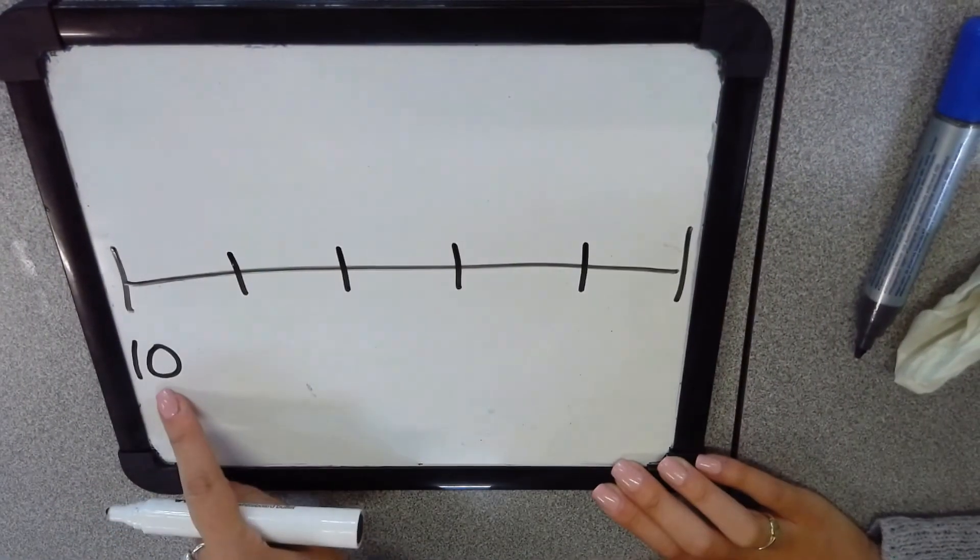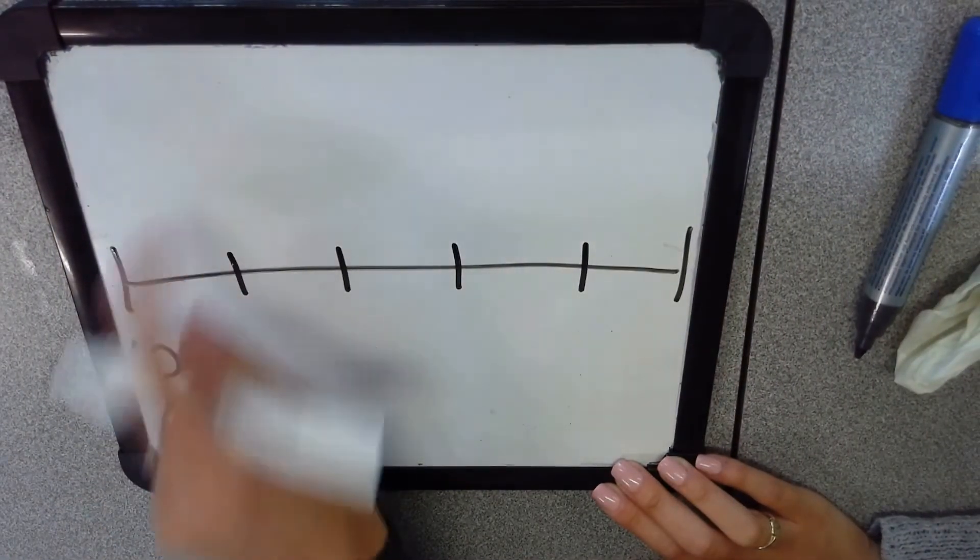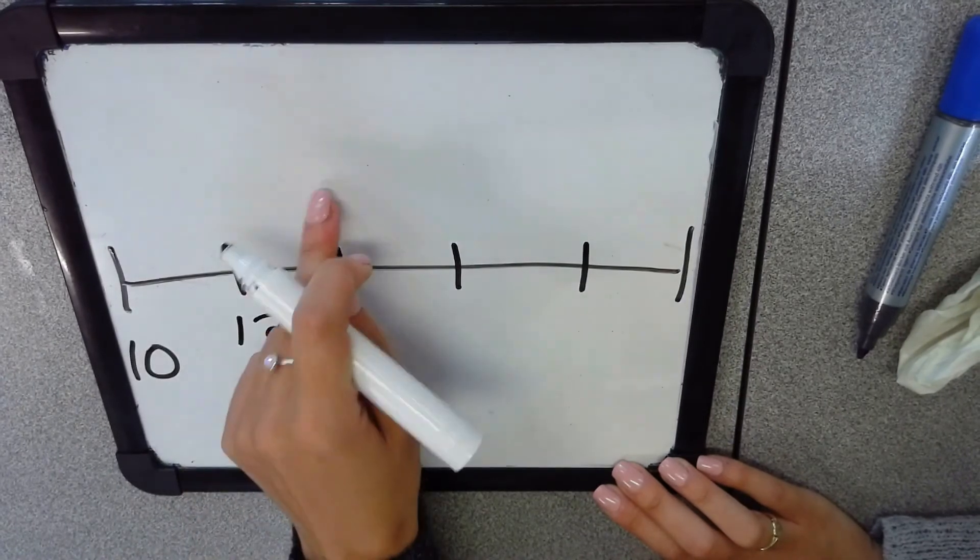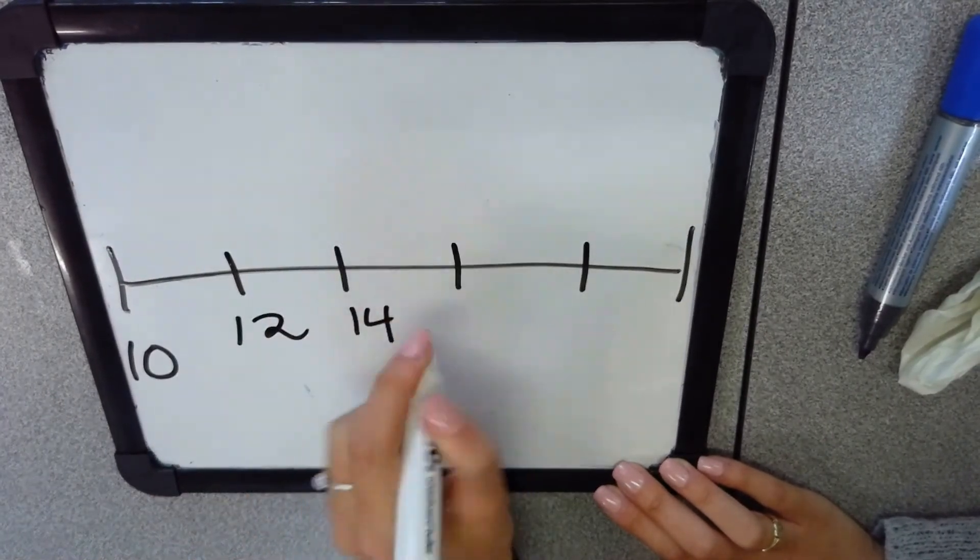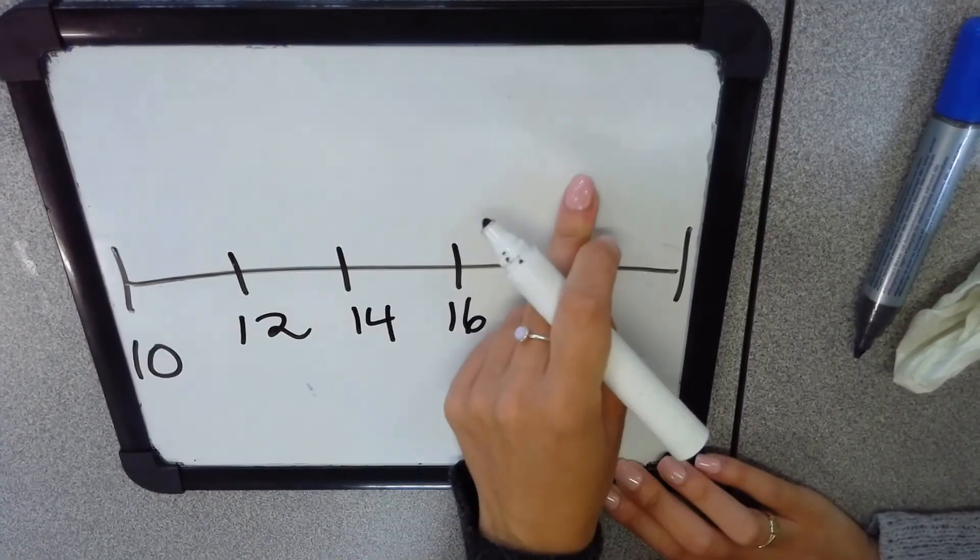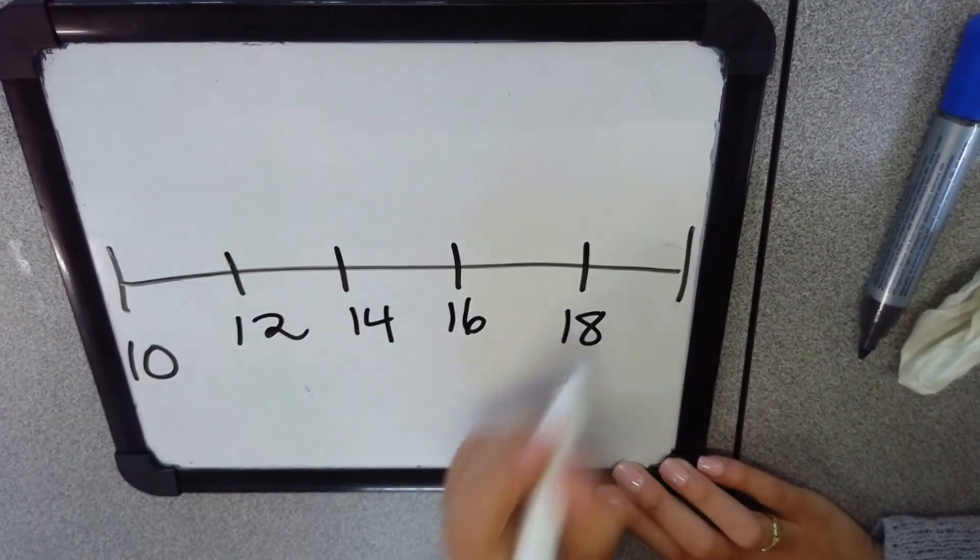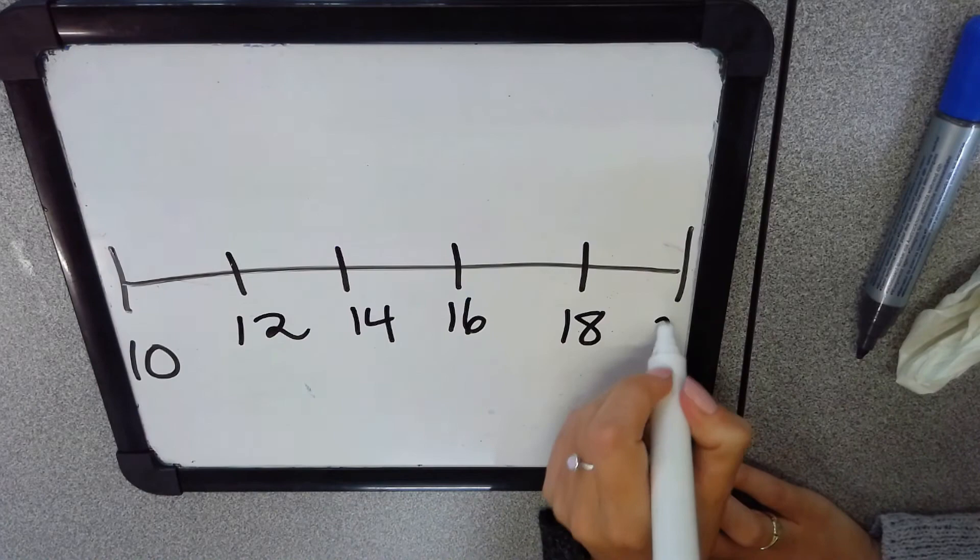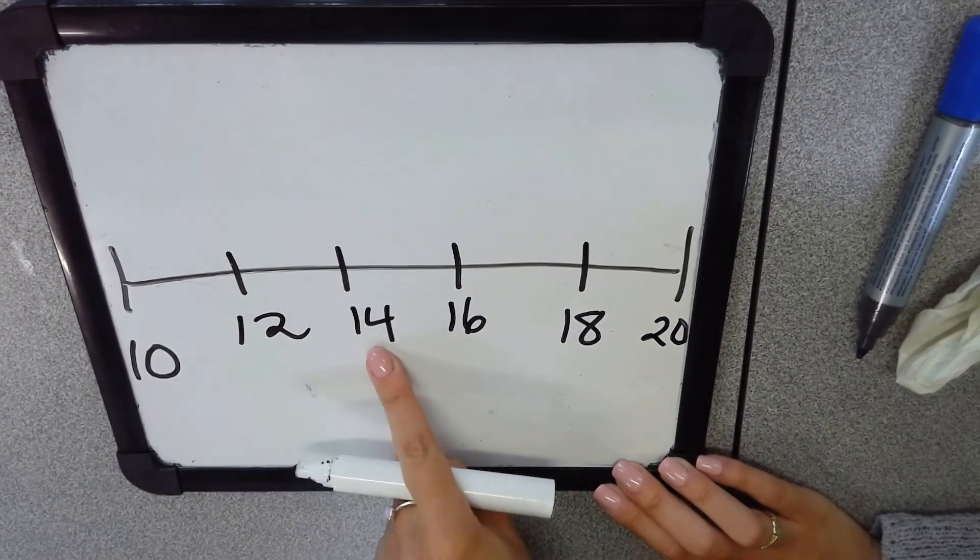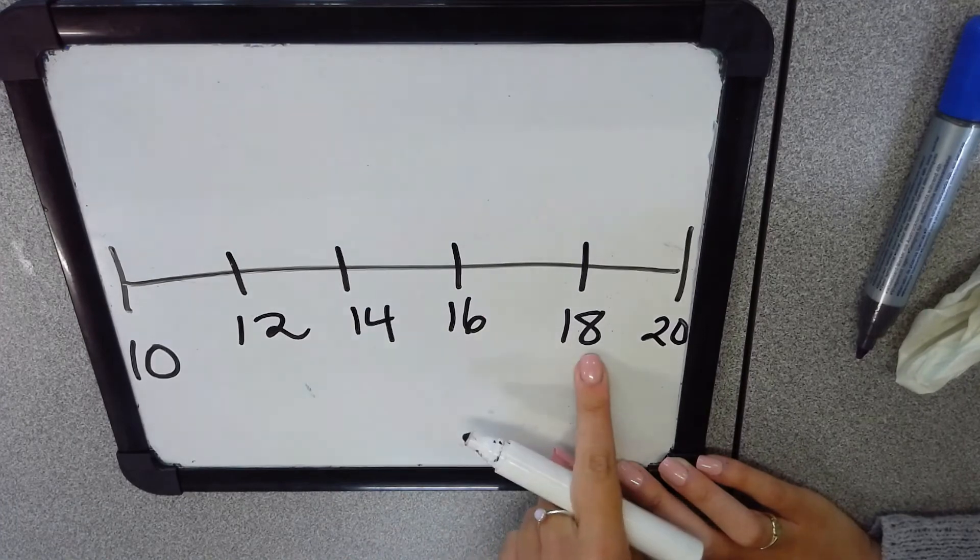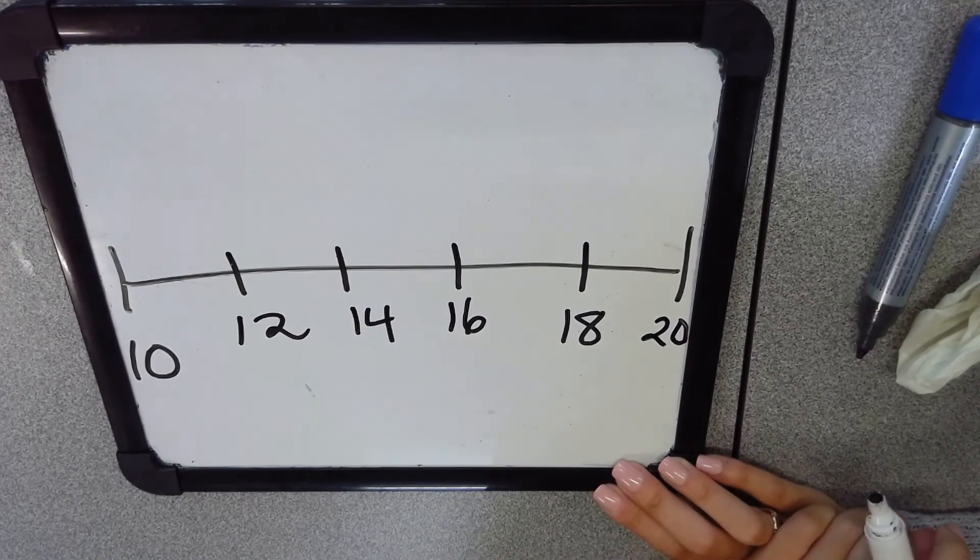It would sound like this. 10, 11, 12, 13, 14, 15, 16, 17, 18, 19, 20. 10, 12, 14, 16, 18, 20. We are counting by twos and how do I know?